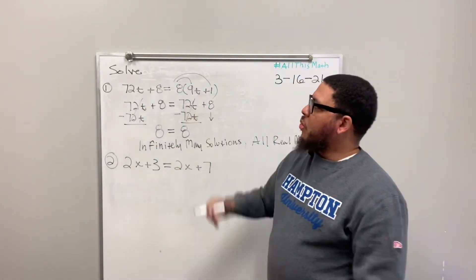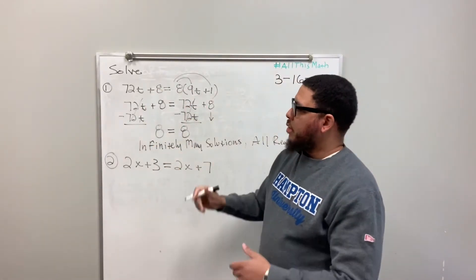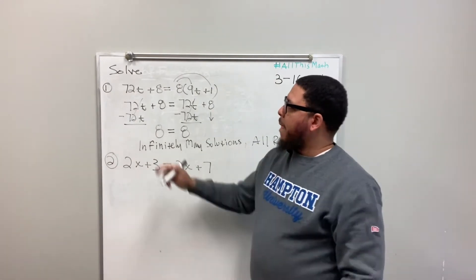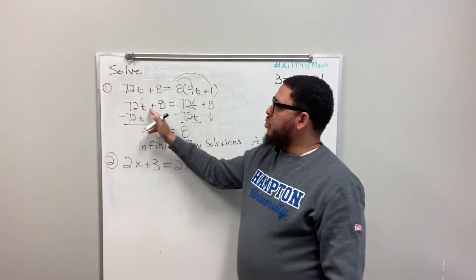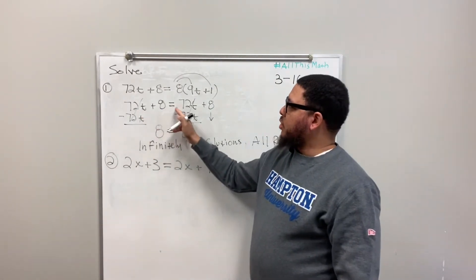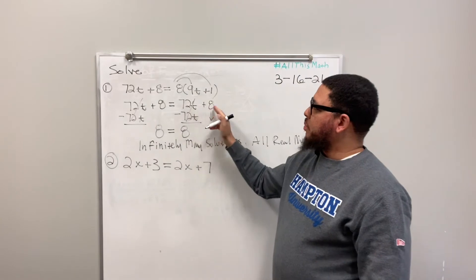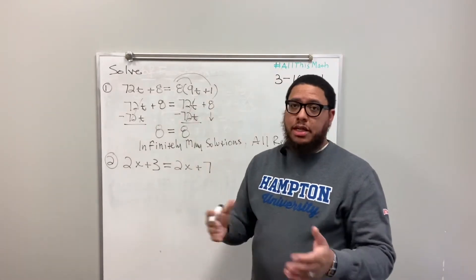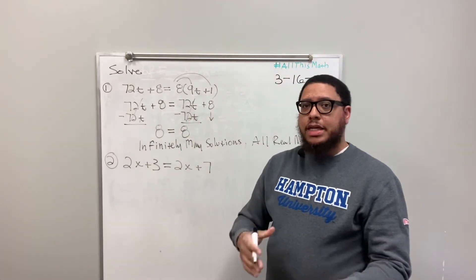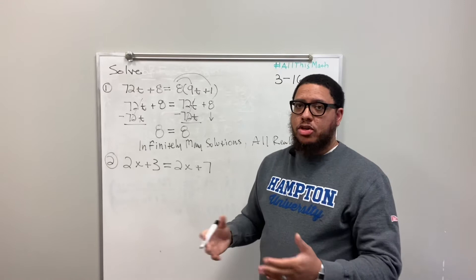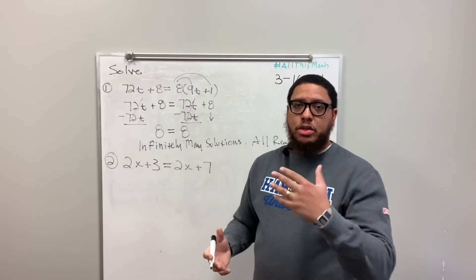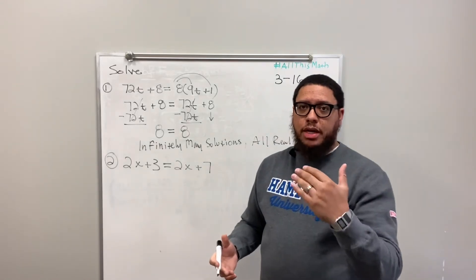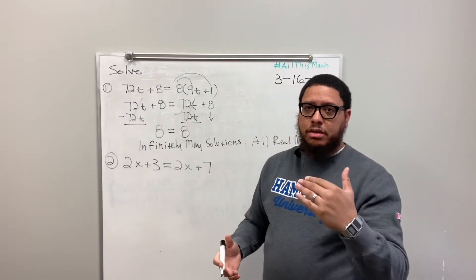And you know why? This is something you should have noticed. 72t plus 8 is equal to 72t plus 8 — those are the exact same thing. That's called an identity. It's like when you look in the mirror, you see yourself. That's an identity.